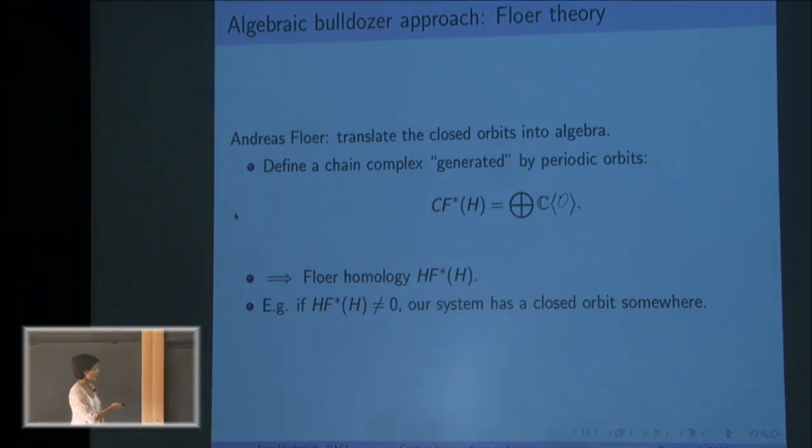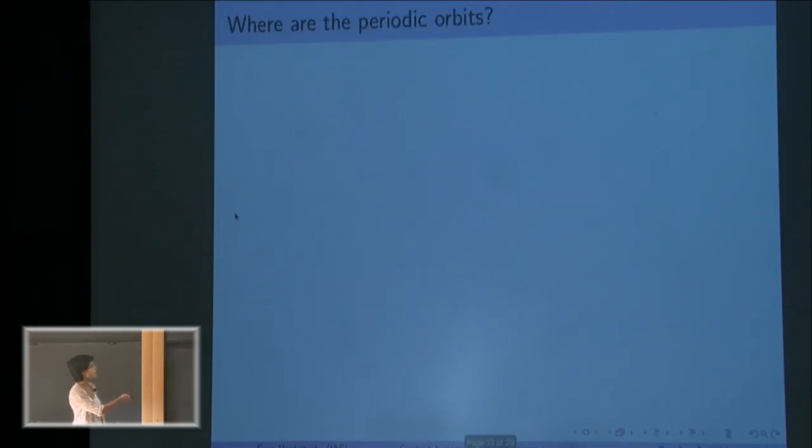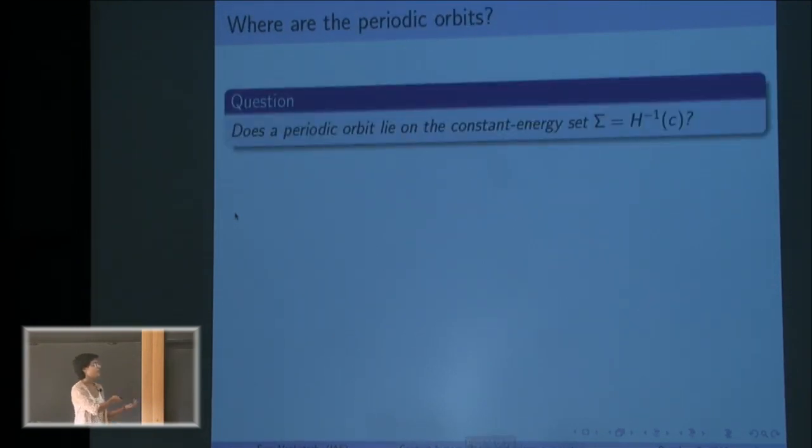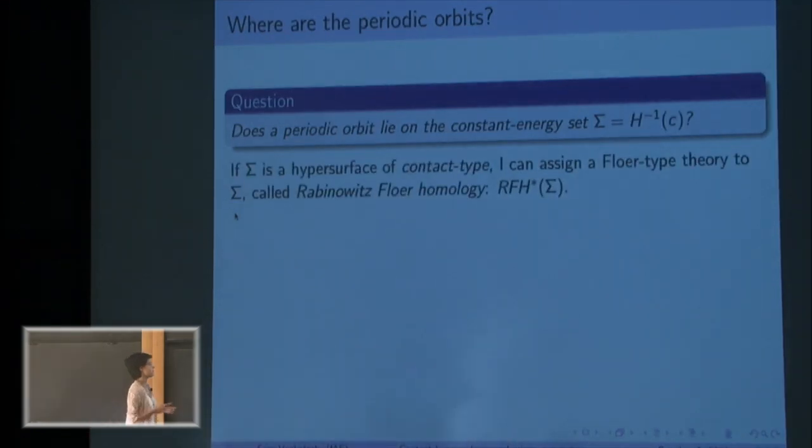So for example, I want to be able to ask, if I have a constant energy set, do I have a closed orbit on my constant energy set? And there is a Floer type invariant that can study this question. It's called Rabinowitz Floer homology.